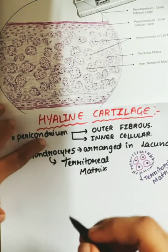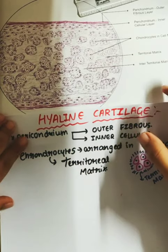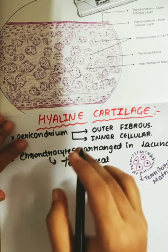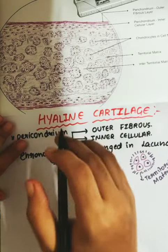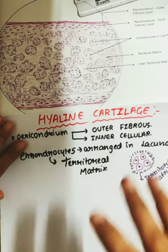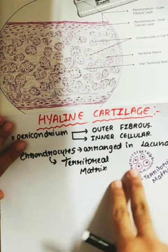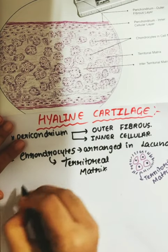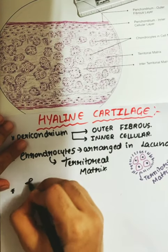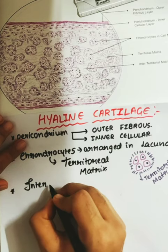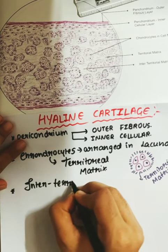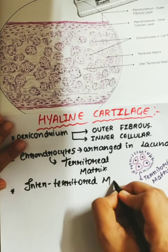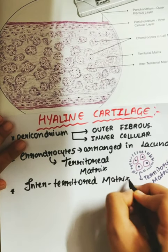Between these nests of cells, you can see the chondrocytes are arranged in nest cells. Between these nest cells, you can see the inter-territorial matrix. Between the two territorial matrices, you can see some space — that is called the inter-territorial matrix.